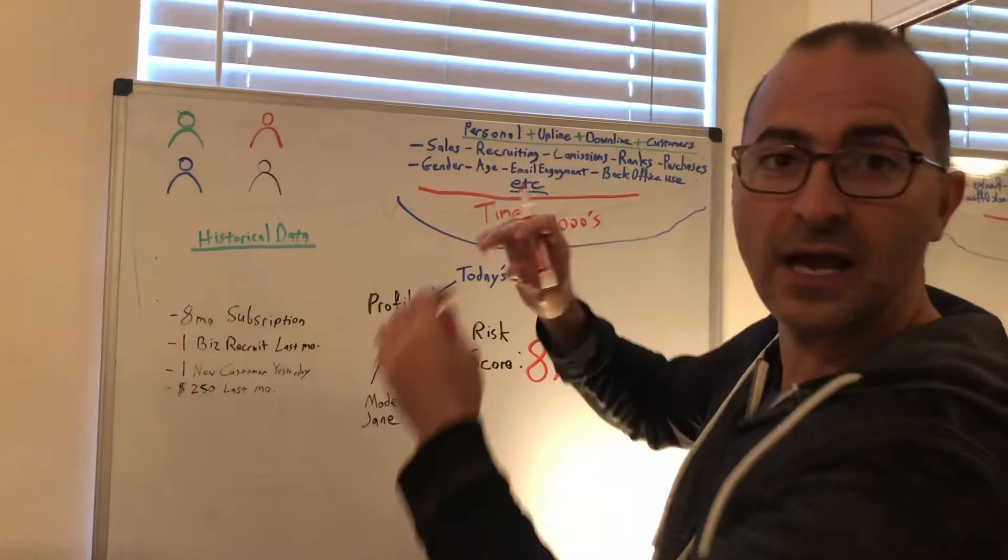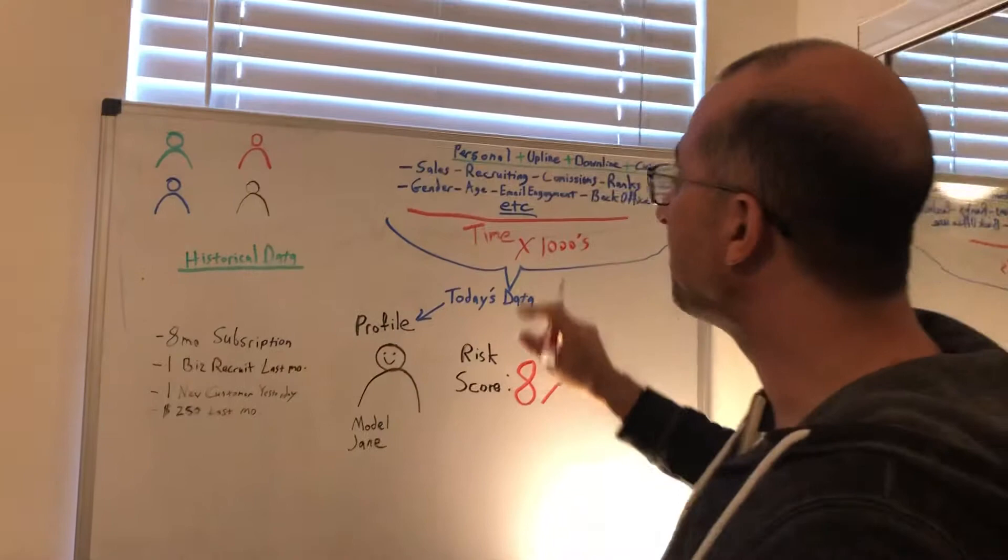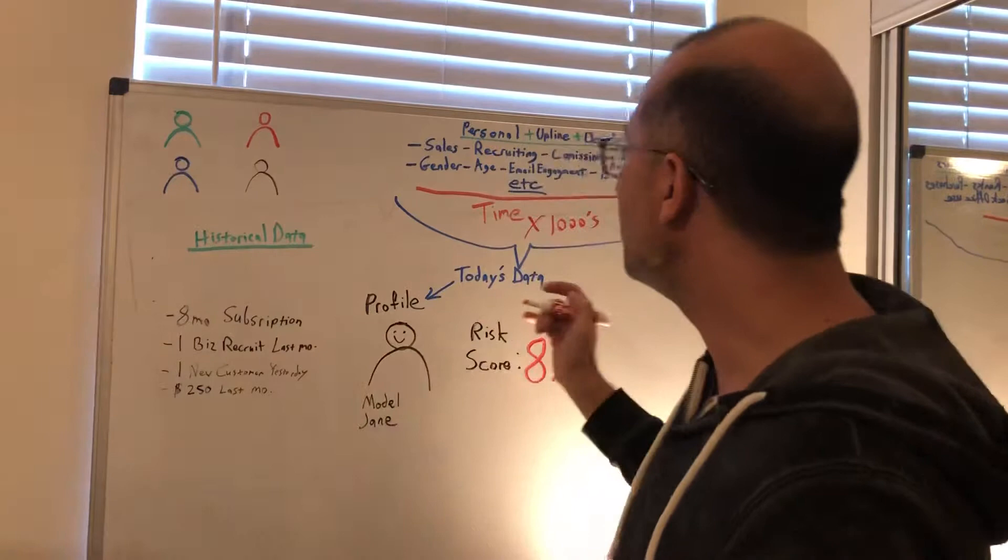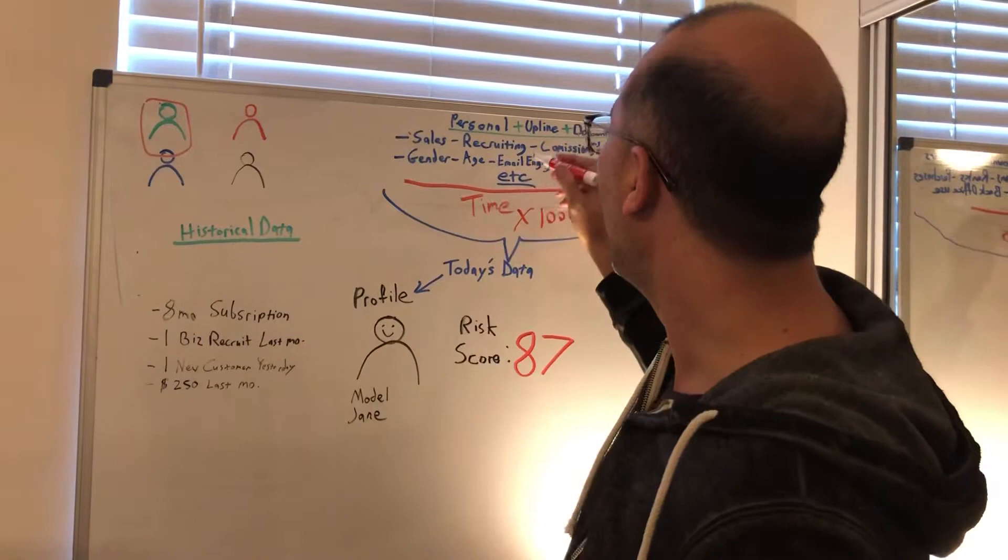Then you've got to move into the historical data. Now you've got a picture of what's going on with Jane and what's going on above, below, and around Jane. Then you want to look at people like Jane in the past who had similar situations going on.